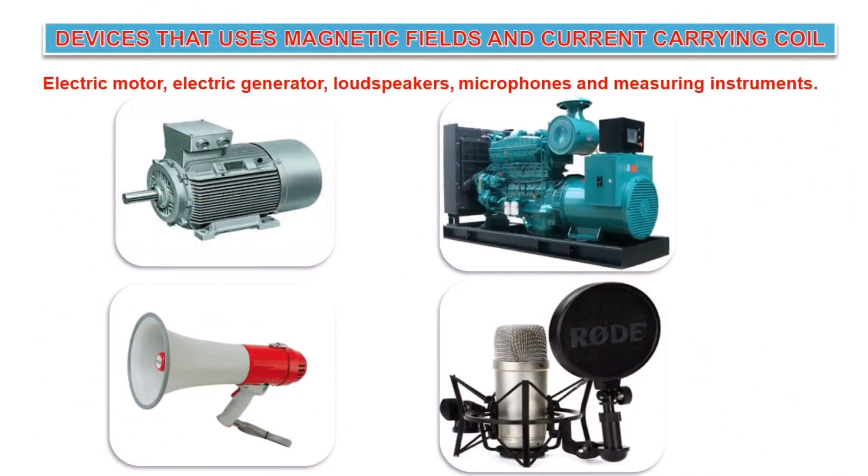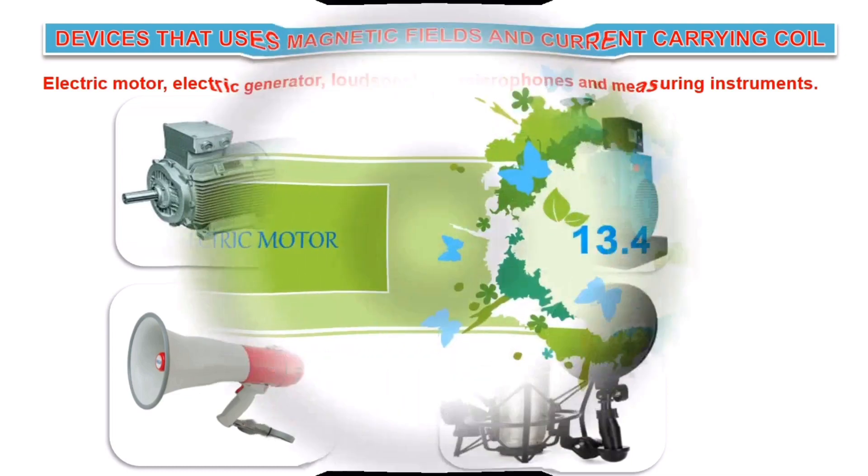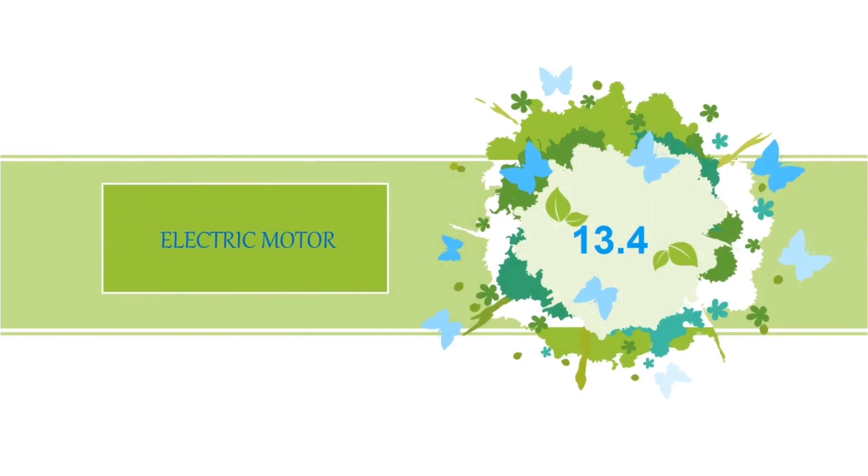Here you can see the devices that use current carrying conductors and magnetic fields. I have listed a few devices: electric motor, generator, microphones, and measuring instruments. That's all about 13.3. Now 13.4: Electric motors.